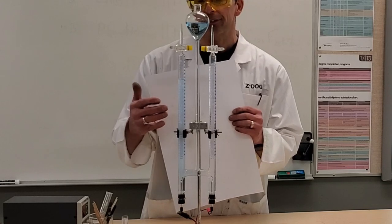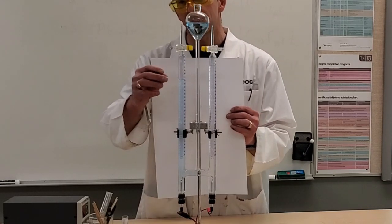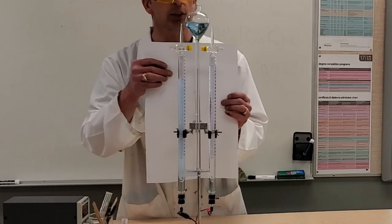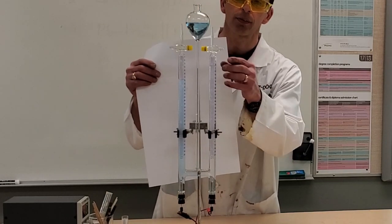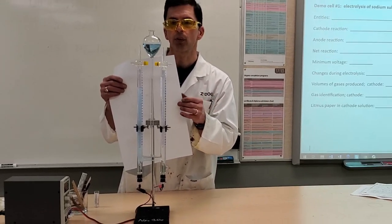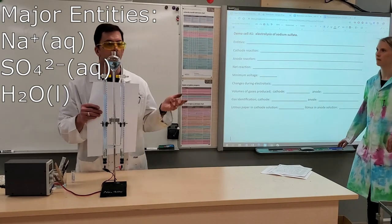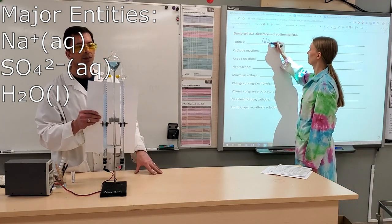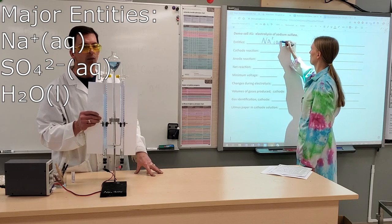On your left, you can see that quite a large quantity of gases have been produced, nearly twice as much as in the electrode on the right. Our solution is sodium sulfate. So our entities then would be sodium ions, sulfate ions, and water.